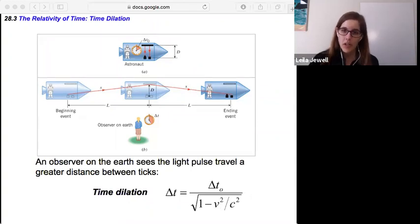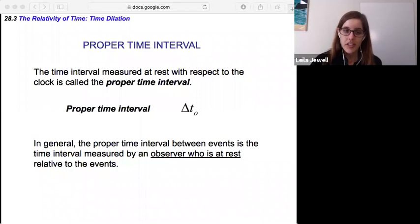Now, these times are really important. It's one of the trickiest parts with these problems is figuring out which time is which. So the delta t naught is known as the proper time interval. That's the time interval that's measured at rest with respect to the clock. So that's something you want to hold on to. And in general, this is a good rule of thumb, the proper time interval between events is the time interval measured by an observer who is at rest relative to the events.